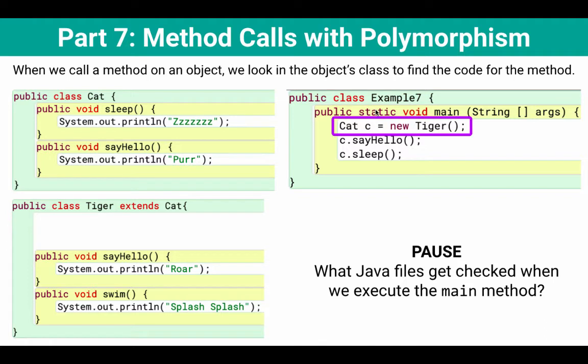I want you to notice that I have Cat c equals a new Tiger. So here I have a parent class Cat referencing an object, a child object, which is of type Tiger.